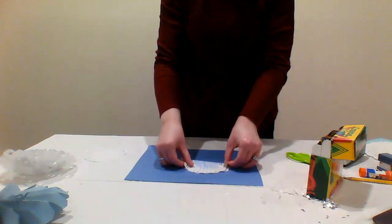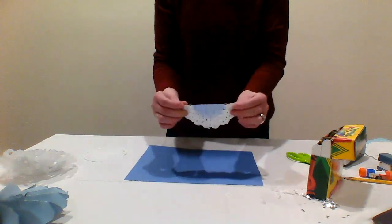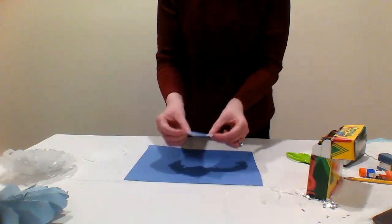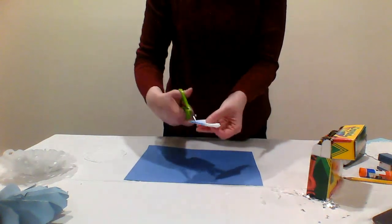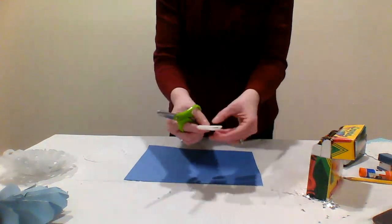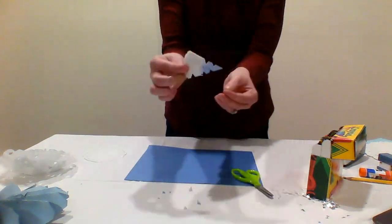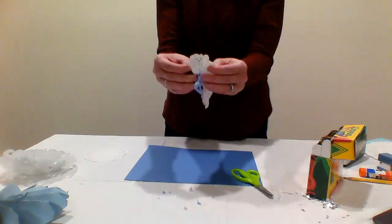Fold the paper doily in half and keep folding it into a small triangular shape. Cut some designs in the edge of the doily with your scissors. Carefully unfold the doily and look at the amazing snowflake.